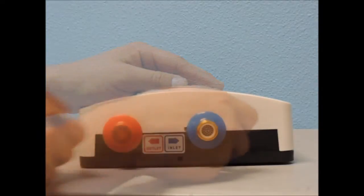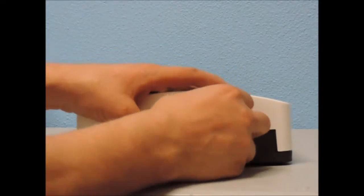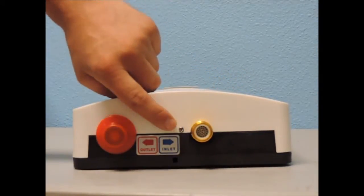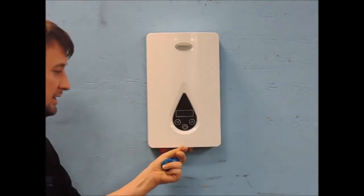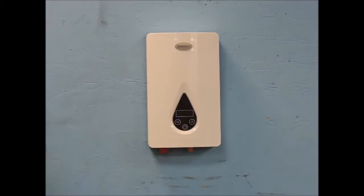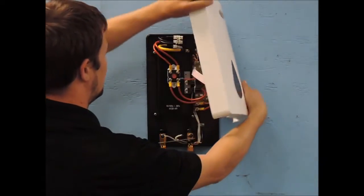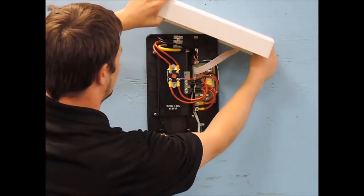Before moving further, let's remove the front cover. Locate the retaining screw at the bottom of the unit located under the cold water inlet indicator. Once the screw is removed, you will be able to pull the cover away. Be careful not to pull too far or you may cause damage to the ribbon cable.